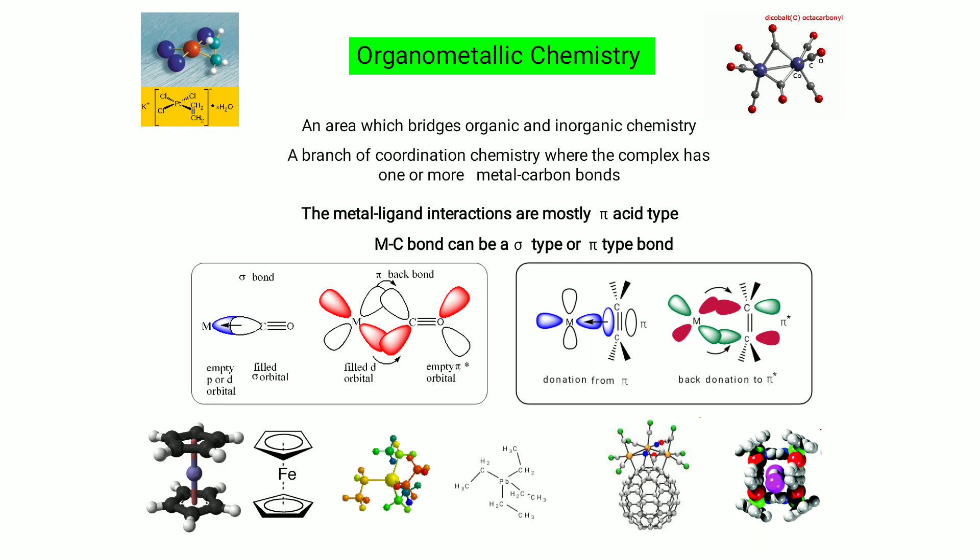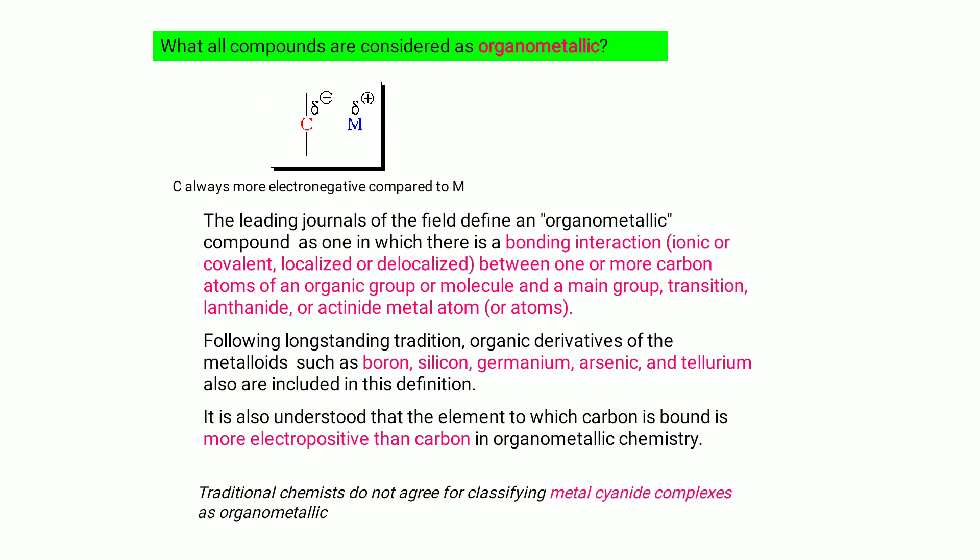Organometallic chemistry is an area which bridges organic and inorganic chemistry — a branch of coordination chemistry where the complex has one or more metal-carbon bonds. The metal-ligand interactions are mostly pi-acid type, and the metal-carbon bond can be sigma type or pi type. We will study the complex which has one or more metal-carbon bonds.